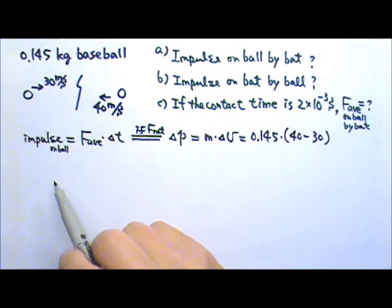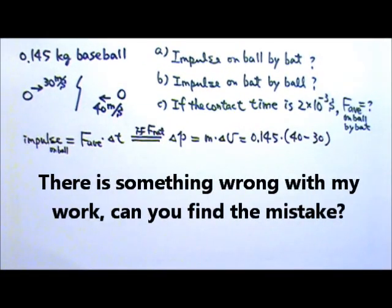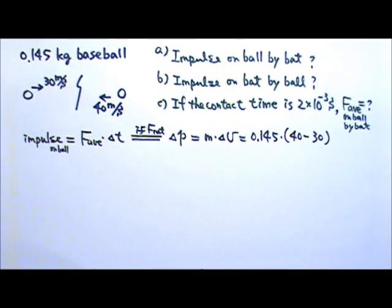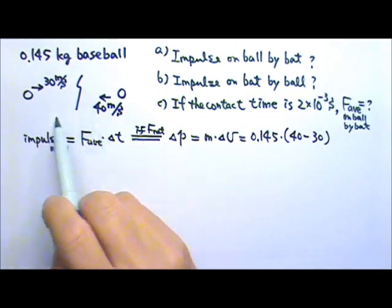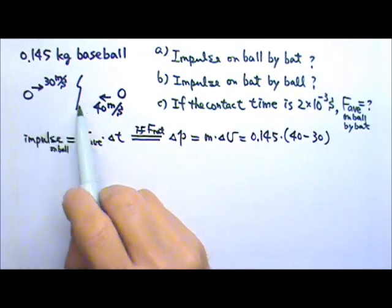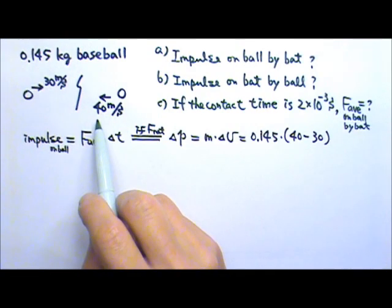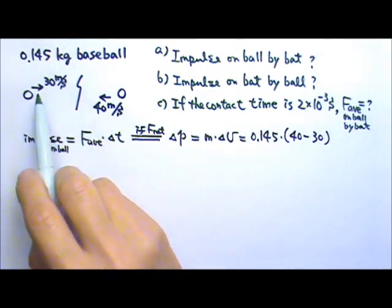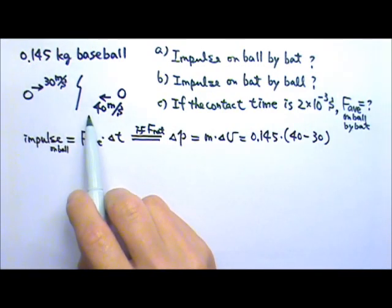There's something wrong with that work. Can you tell me what is wrong? We're dealing with vectors — velocity, momentum, force, and impulse are all vectors. That means we need to pay attention to direction. If we say the 40 meters per second is positive, then we have to say the 30 is negative because they are in opposite directions. You can choose to the left as positive or to the right as positive — it does not matter which one, because the coordinate system is something we can choose.